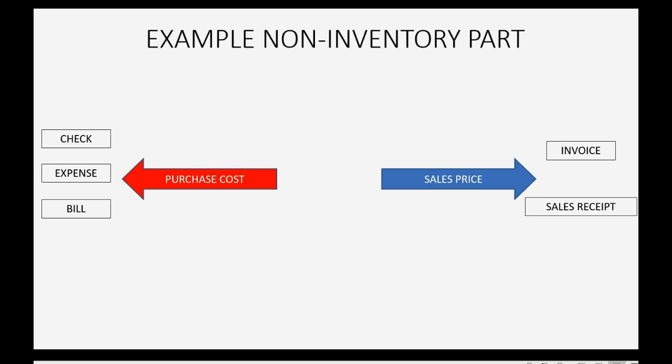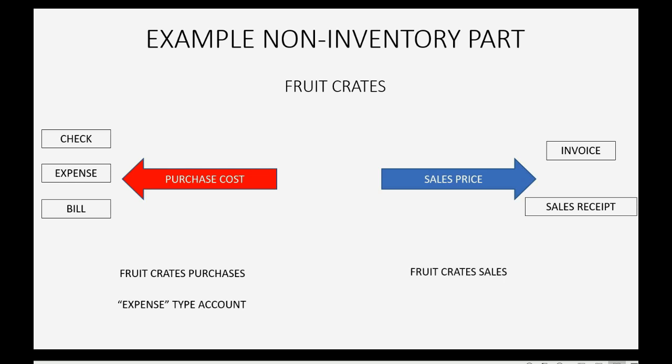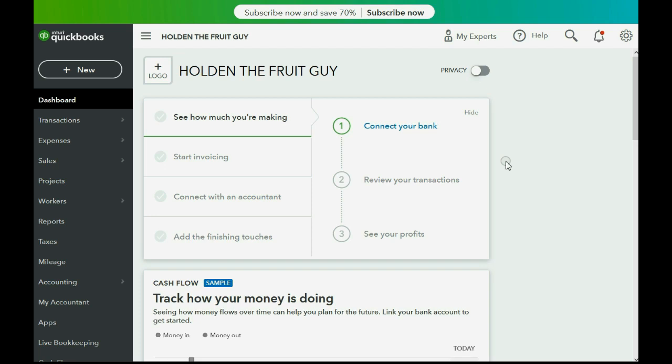Our example of a non-inventory part will be fruit crates — the containers that we give when we sell the fruit. We have to buy them and charge a little markup to our customers for the crates, but we don't actually count them or keep track of the quantity. The fruit crates' purchase cost will go into an expense type of account, and when we sell them, the income will go into an income type of account, like sales. Let's add those two accounts to the chart of accounts as part of the setup.